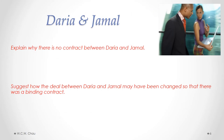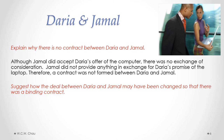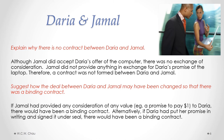In our scenario, the first question: explain why there is no contract between Daria and Jamal. Although Jamal did accept Daria's offer of the computer — so there was offer and acceptance, and therefore an agreement — there was no exchange of consideration. Jamal did not provide anything in exchange for Daria's promise of the laptop. Therefore, a contract was not formed. The second question: suggest how the deal may have been changed so there was a binding contract. If Jamal had provided any kind of consideration of any value, even a promise to pay one dollar to Daria, there would have been a binding contract. Or alternatively, if Daria had put her promise in writing and signed it under seal, there would have been a binding contract.